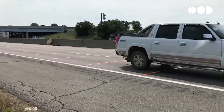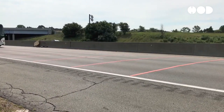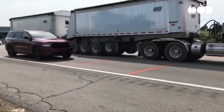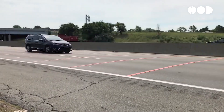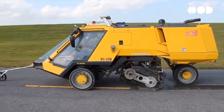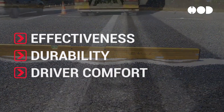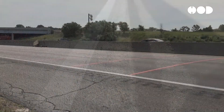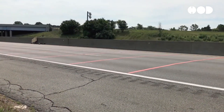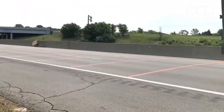Ubiquitous on highways worldwide, rumble strips are pivotal in alerting drivers when they veer from their lanes, thereby preventing accidents and saving lives. Despite their apparent simplicity, designing rumble strips involves meticulous considerations of factors like effectiveness, durability, and driver comfort. In this episode, we delve into the intricate design principles behind rumble strips and explore their contributions to road safety.